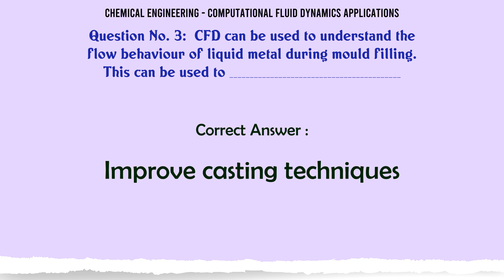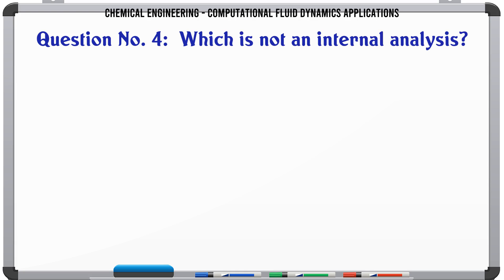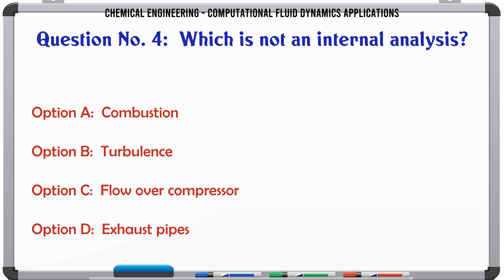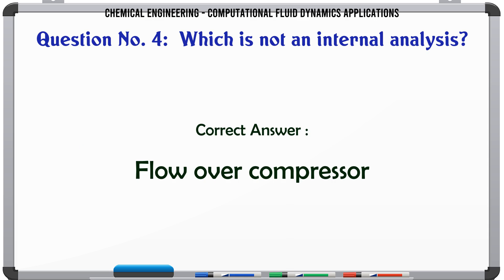Which is not an internal analysis? A. Combustion. B. Turbulence. C. Flow over compressor. D. Exhaust pipes. The correct answer is: flow over compressor.